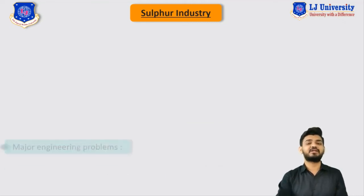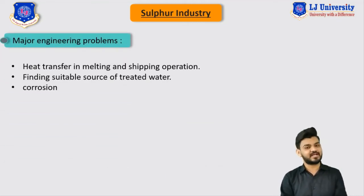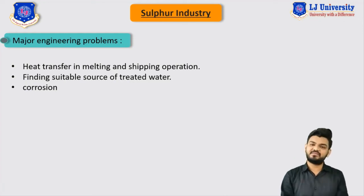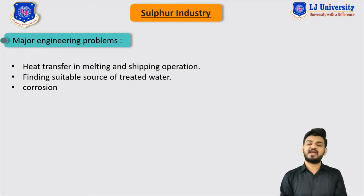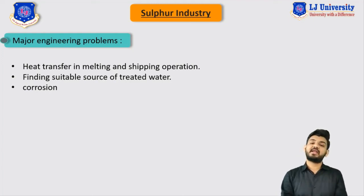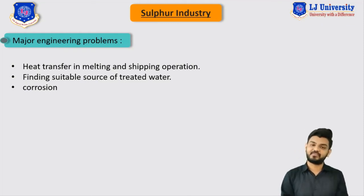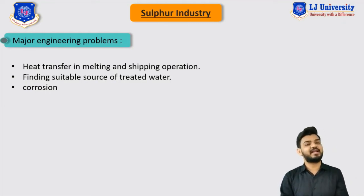The major engineering problems associated with the Frasch process include heat transfer during the melting and shipping of sulphur. Melting sulphur within the earth's crust is tedious, and the corrosive earth environment creates erosion and corrosion problems. Another major challenge is finding a suitable source of treated water, and corrosion remains an ongoing concern since we are dealing with sulphur and sulphur-related gases.